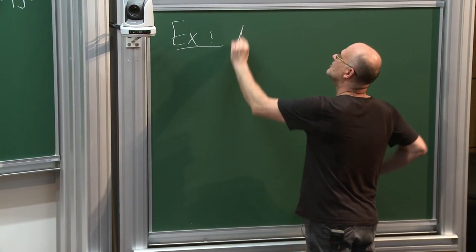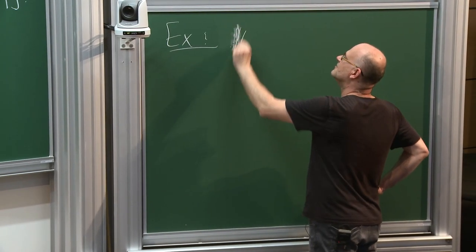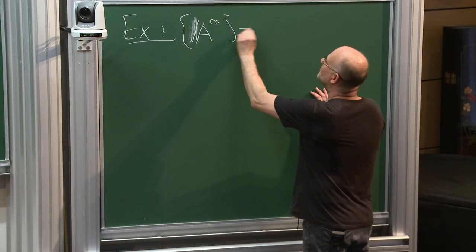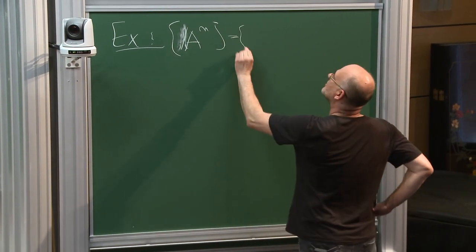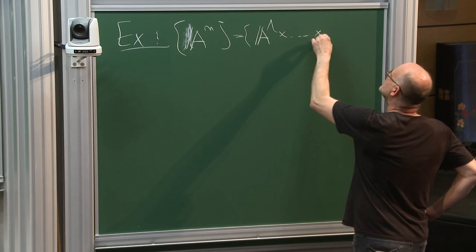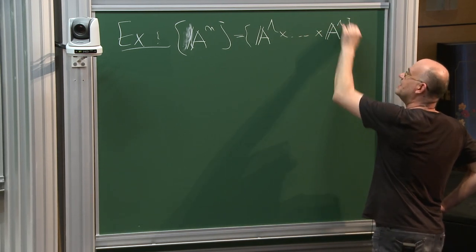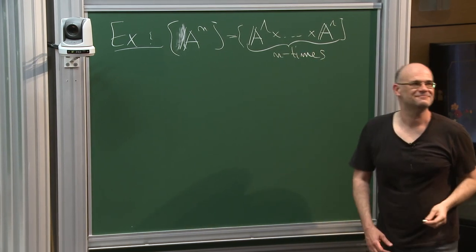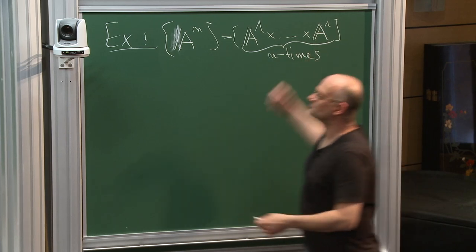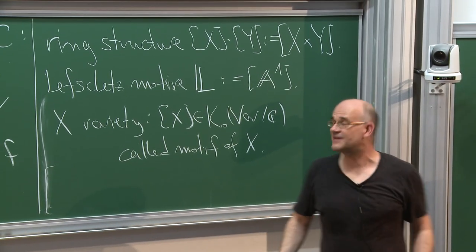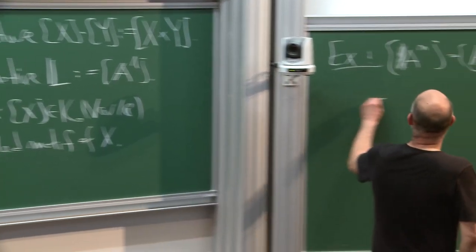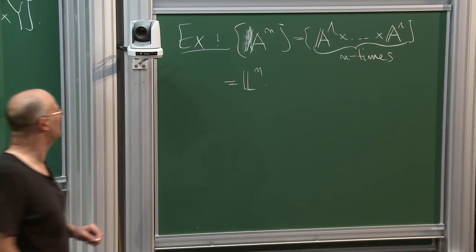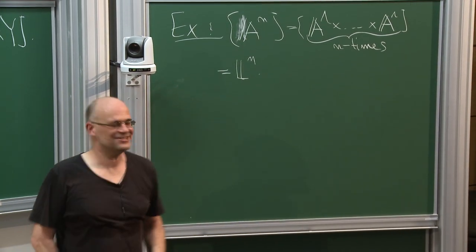What is the class of affine n-space? Affine n-space can be realized as the n-fold Cartesian product of the affine line. Cartesian product is the product in this ring and the class of the affine line is the Lefschetz motive L, so [A^n] = L^n. That was our first computation in this ring.